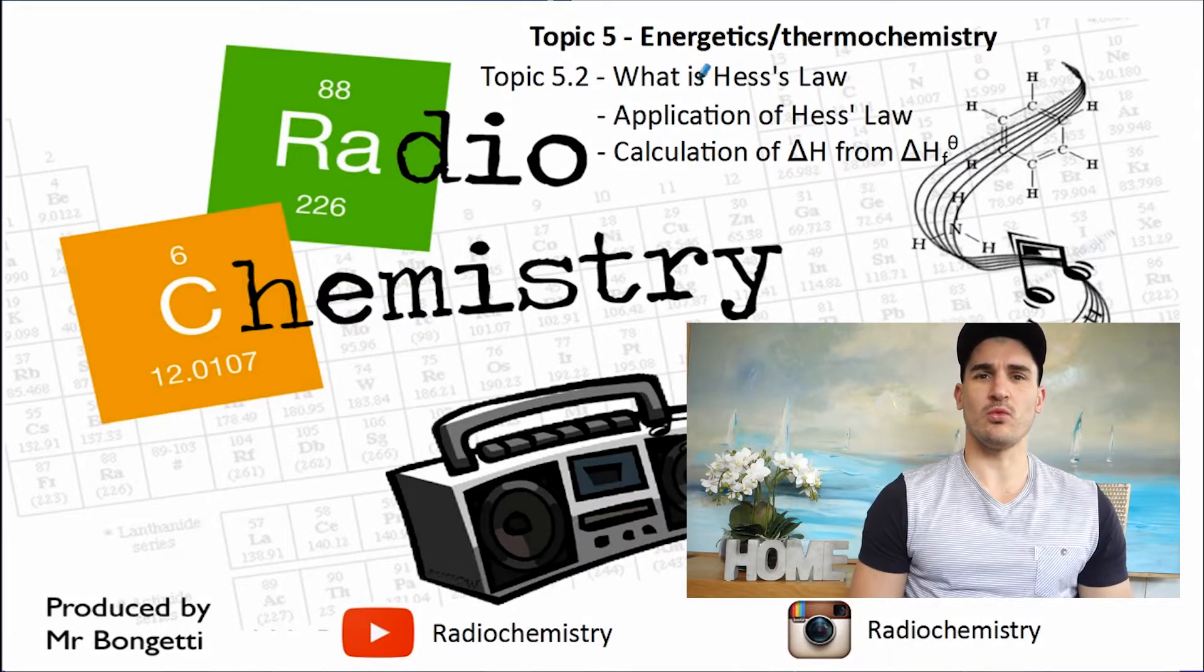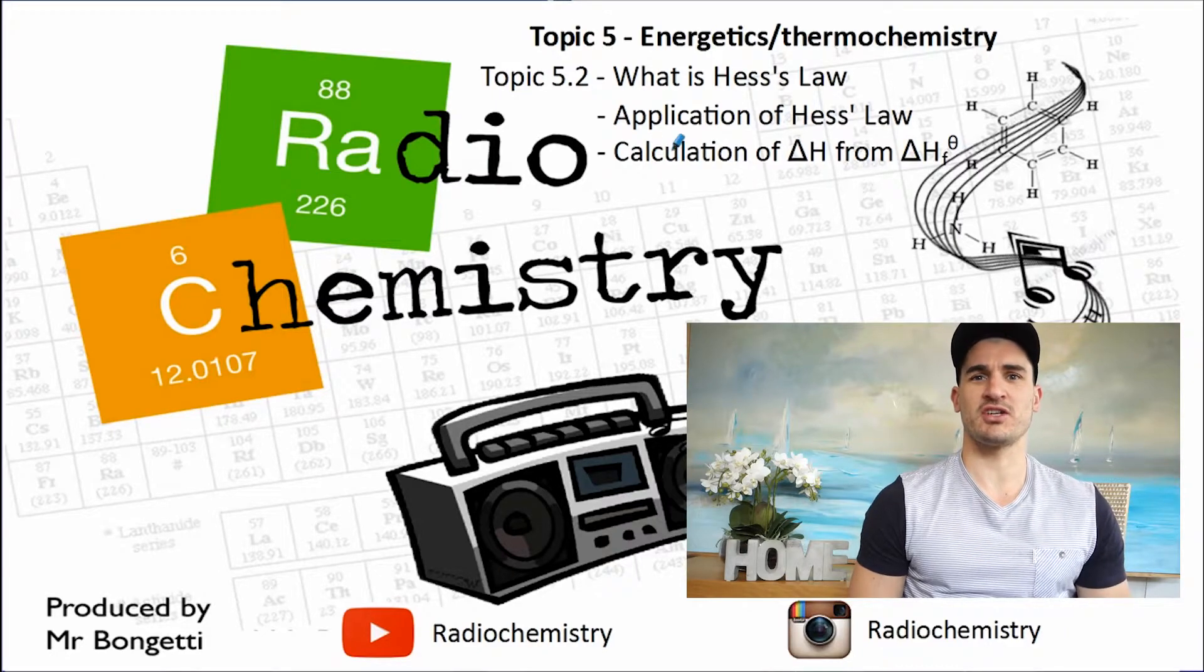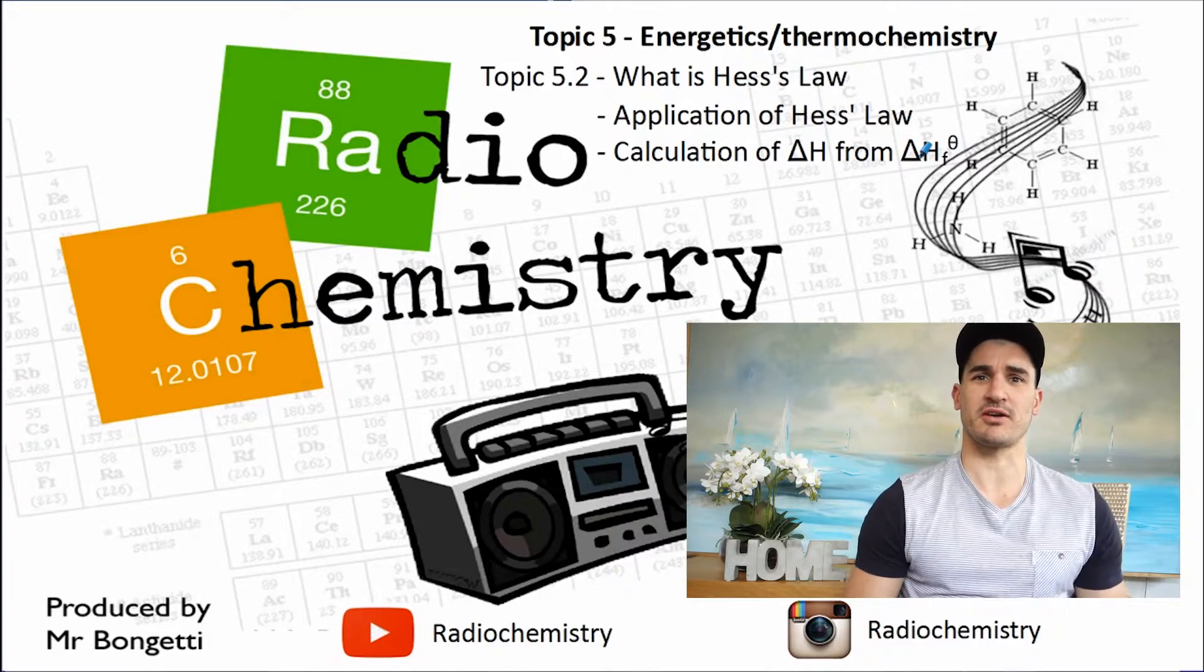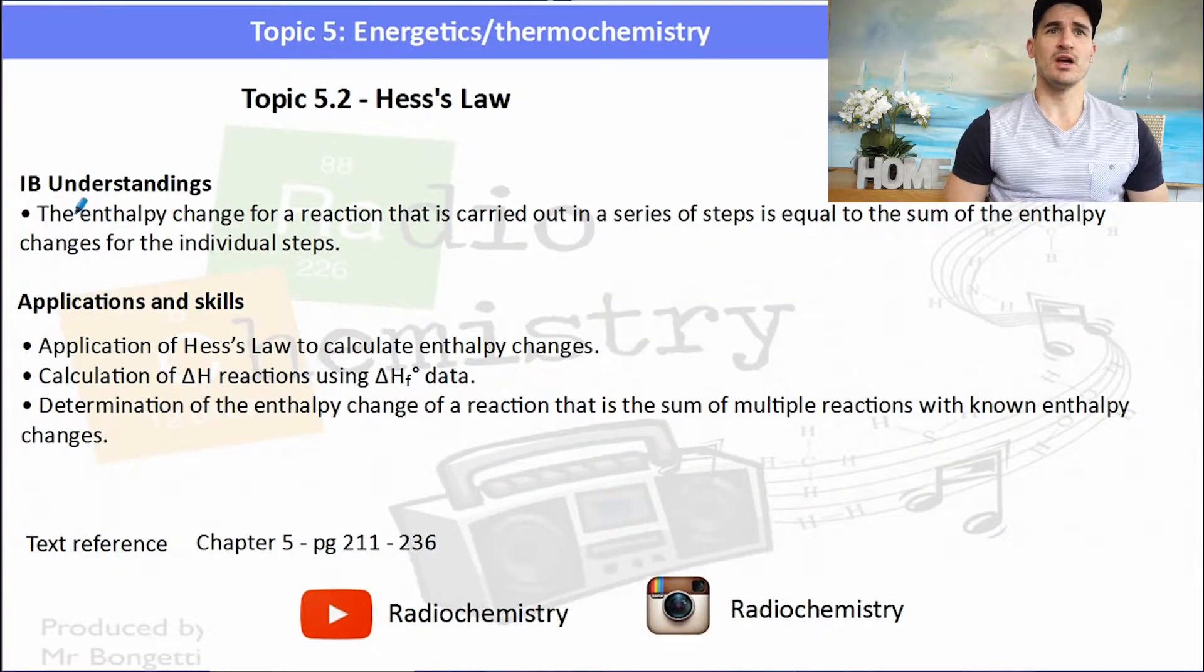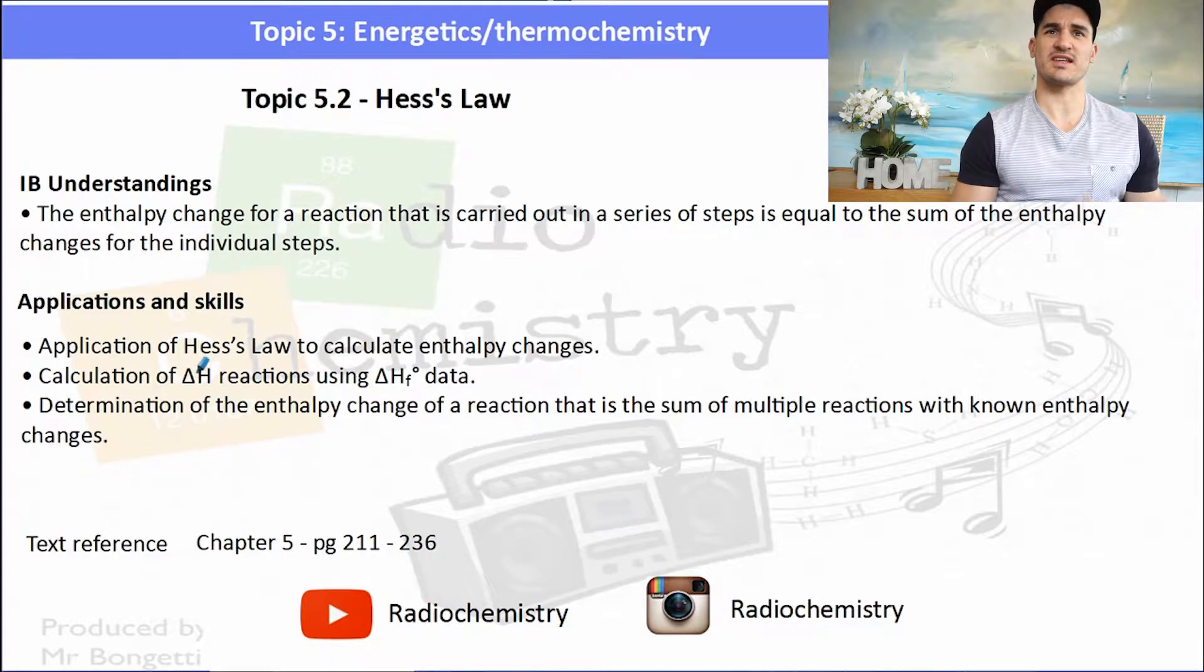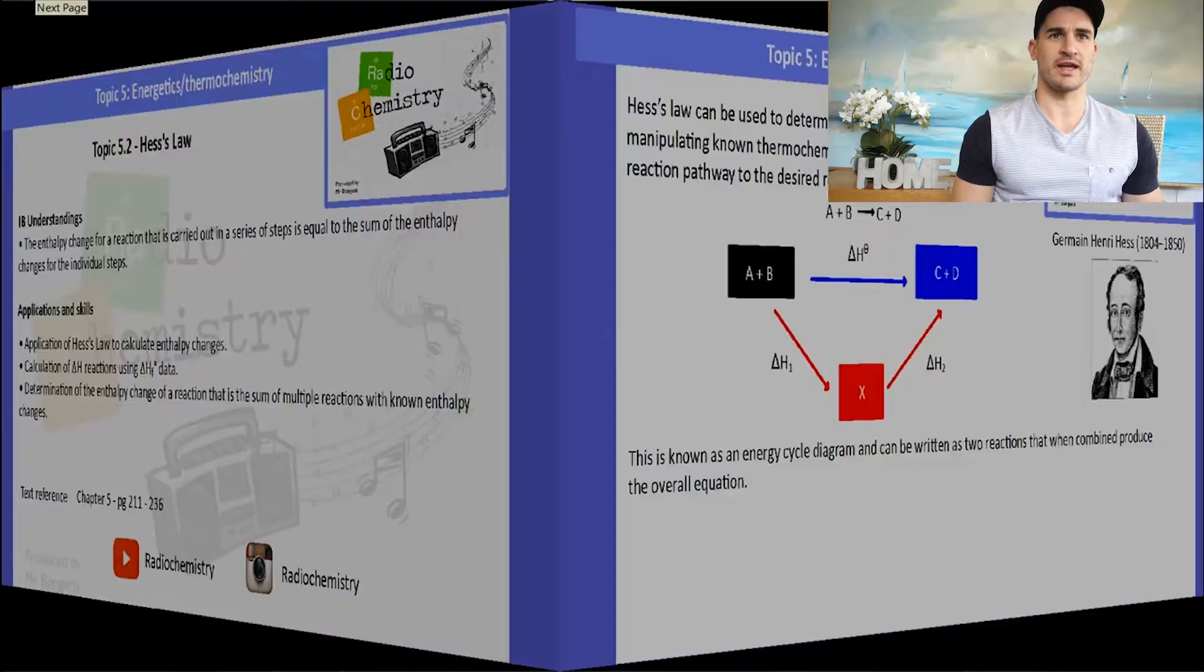Alright, topic 5, volume number 5, what is Hess's law? We look at applications of Hess's law and then we do some calculations of delta H using delta HF from the last video. So the IB understandings talk about Hess's law which is essentially the sum of the enthalpy changes for the individual steps. That's the overall enthalpy of a reaction.